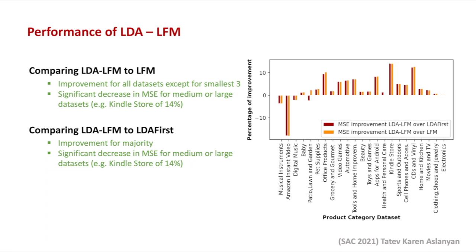Let us now look at the second part of the results, represented by this figure, which shows the percentage decrease in MSE or the improvement in the prediction accuracy when comparing the proposed LDA-LFM model to the standard LFM model and the LDA first model. What we observe is that in both cases, the majority of the bars lie above the zero level, which is an indication of a positive effect on the prediction accuracy when using the proposed method.